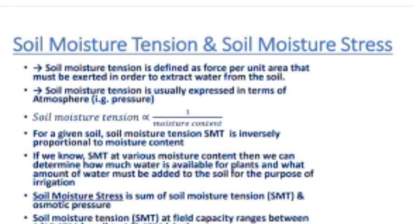For a given soil, Soil Moisture Tension (SMT) is inversely proportional to moisture content. So how much moisture content is affected by soil moisture tension can be determined. If we know SMT at various moisture contents, then we can determine how much water is available for plants.